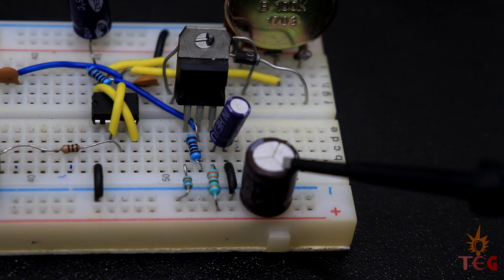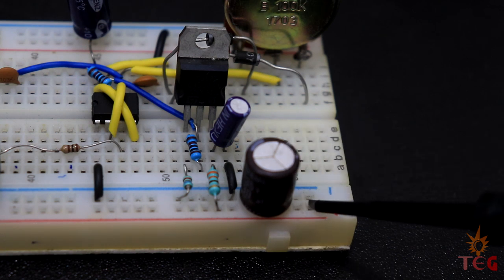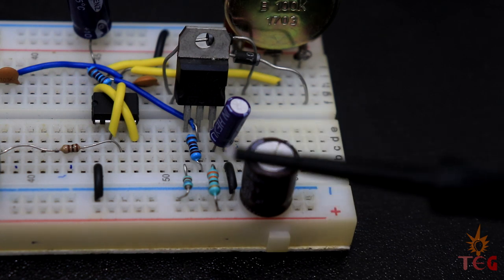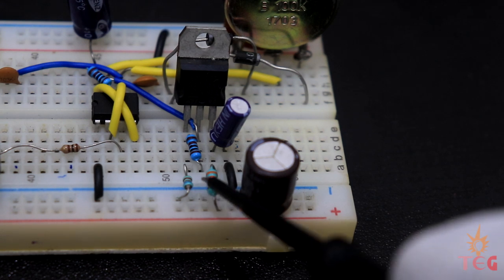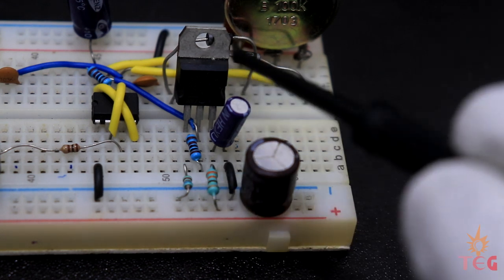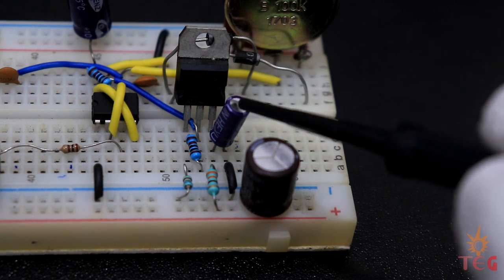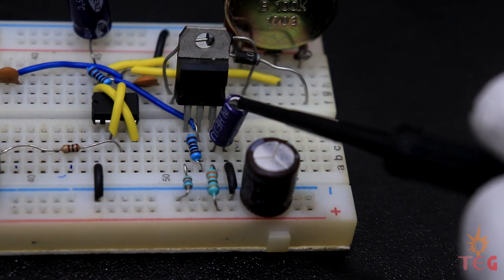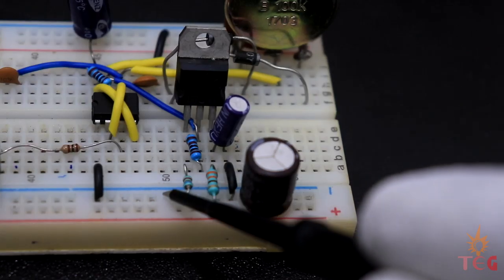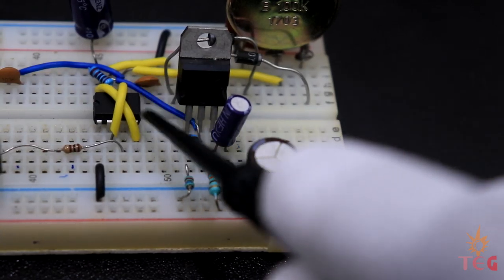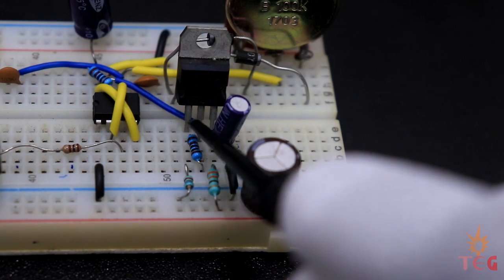A 330 microfarad capacitor is connected across the input power terminals to smooth out the input DC, followed by a 330 ohm resistor in series with 47 microfarad capacitor which forms a low-pass filter, which then powers the LM317 voltage regulator.